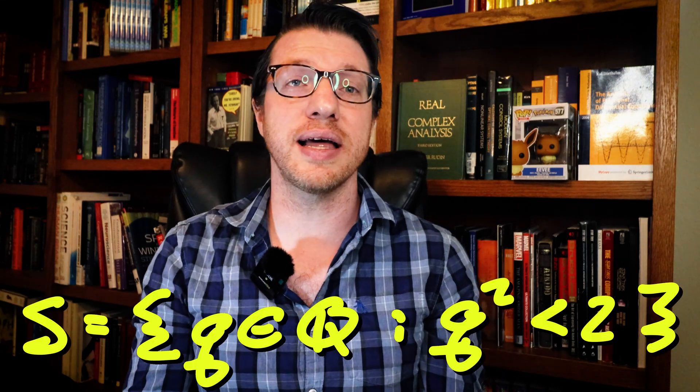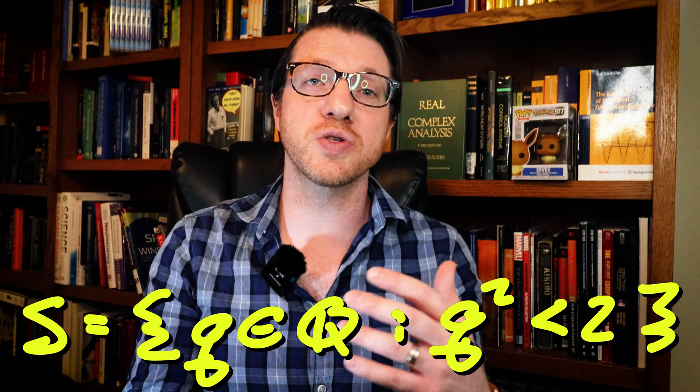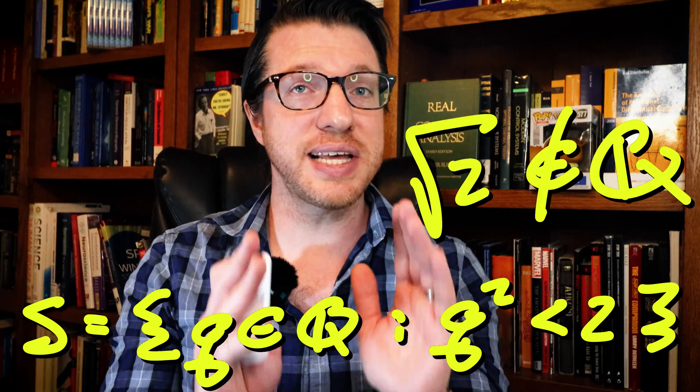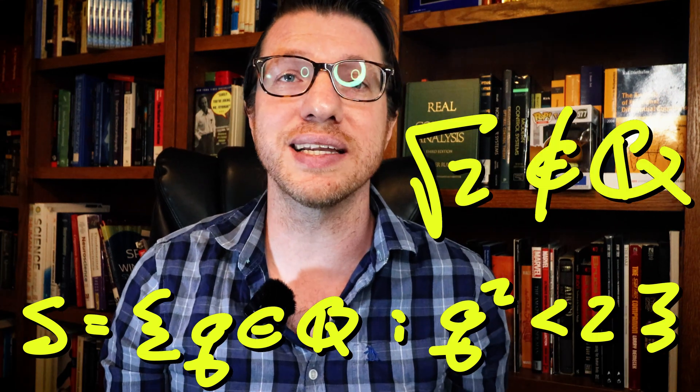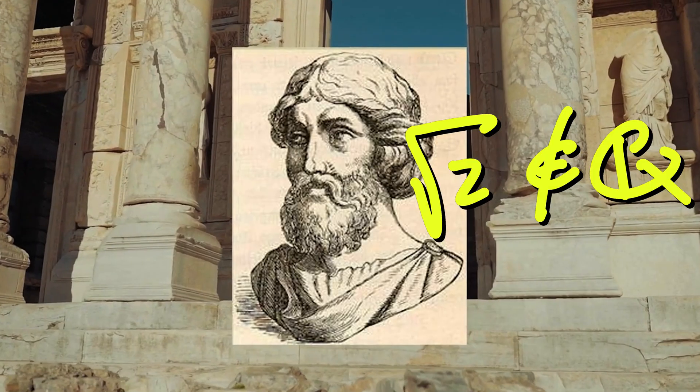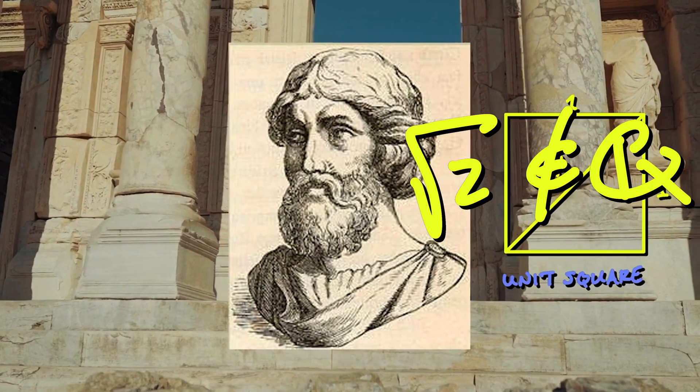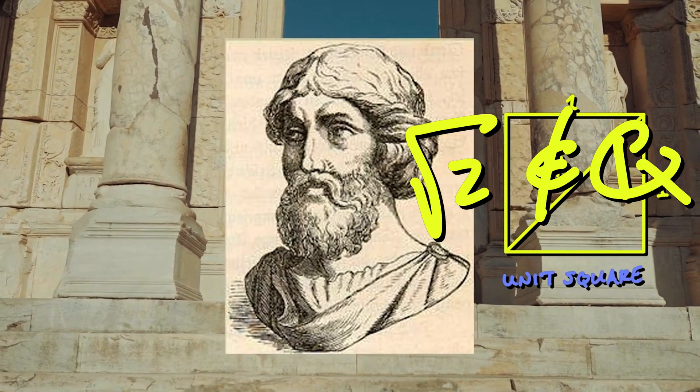This might seem like something that should be obviously true, but we have another field of numbers that is totally ordered and does not have this least upper bound property. That is the rational numbers. The easiest example to look at is at all rational numbers whose square is less than two. Our intuition says that the square root of two should be the least upper bound of this set. However, Hippasus sacrificed his life to show us that the square root of two isn't a rational number.